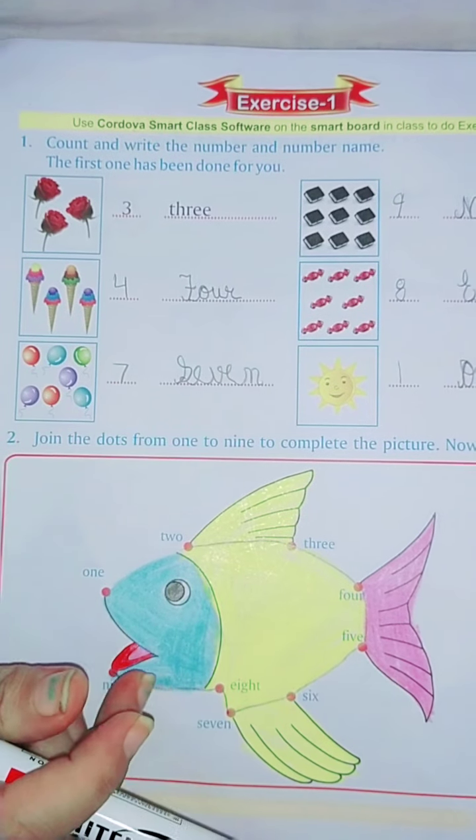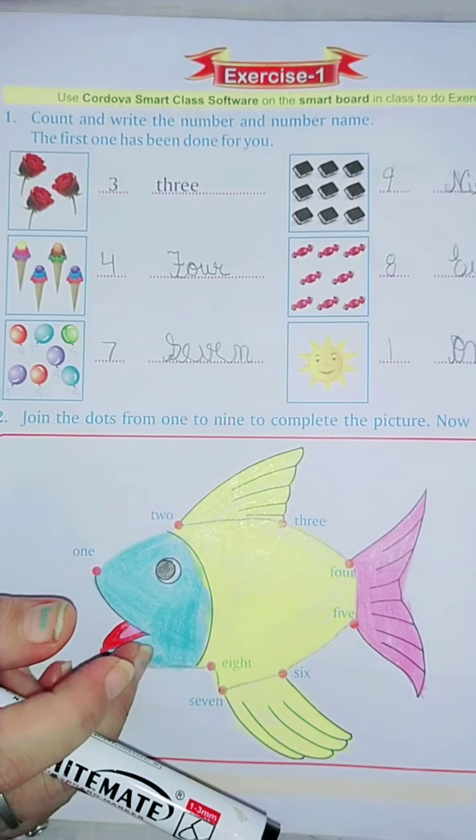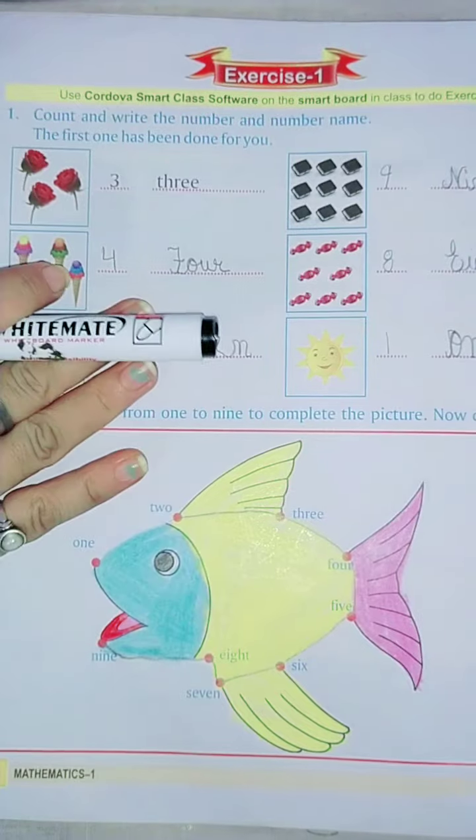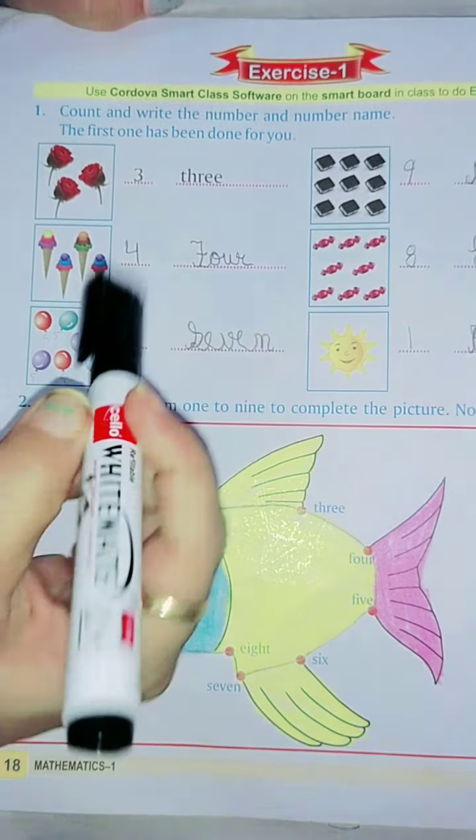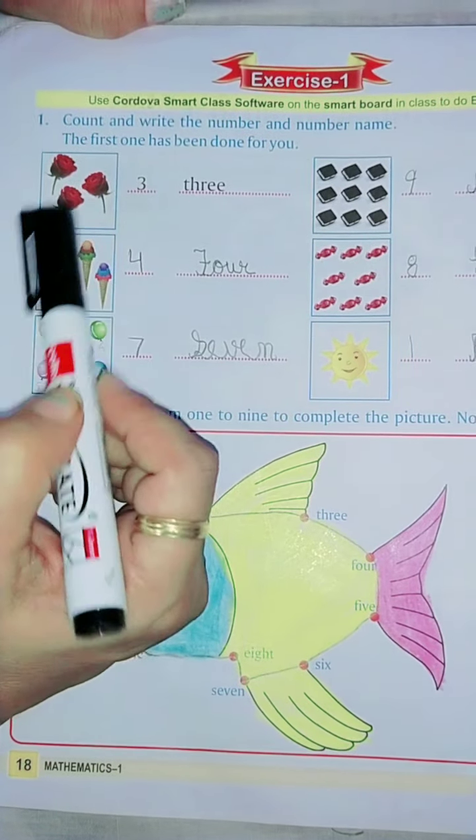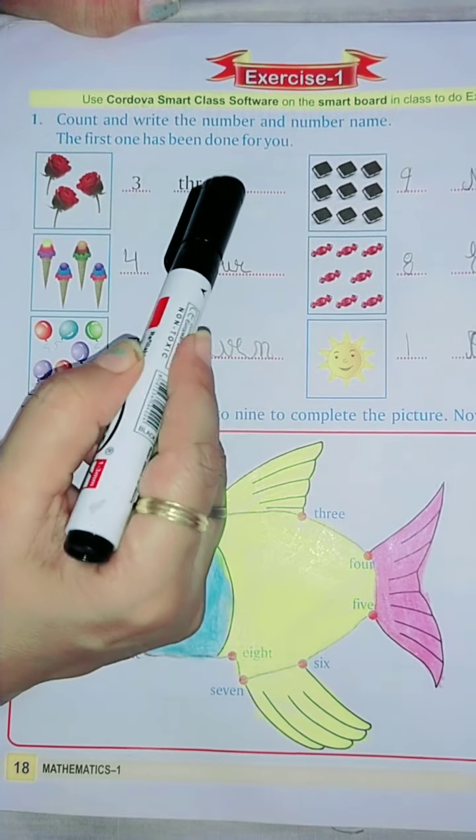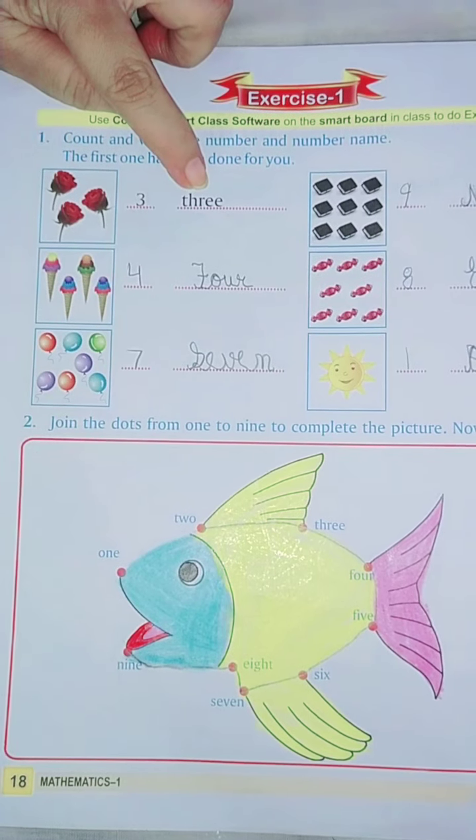Now you understood. I explained to you on board how you have to count and write. Now we will do the exercise in book on page number 80. See, there are 3 flowers. How many? 1, 2, 3. Answer is already written and the spelling also you have to write.